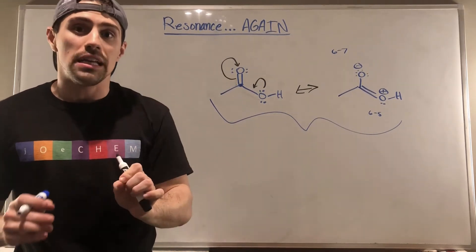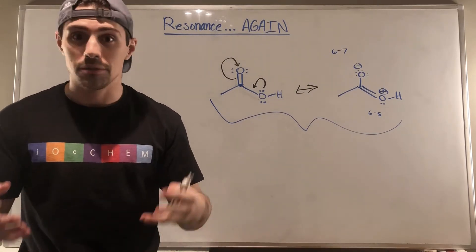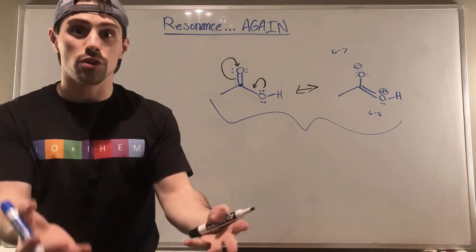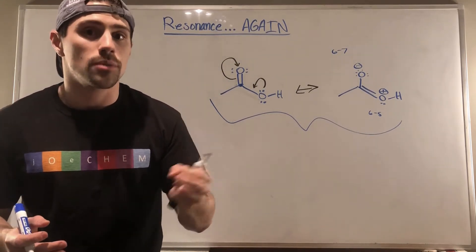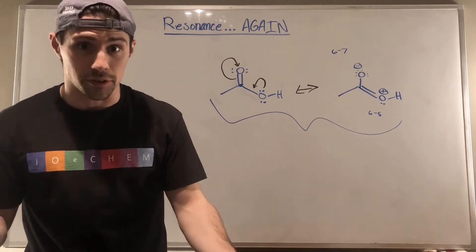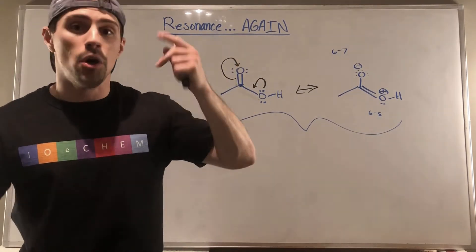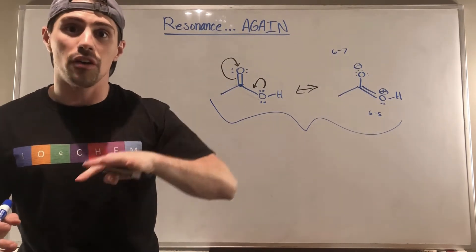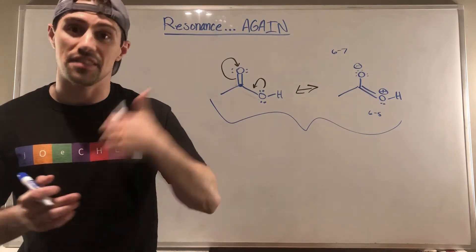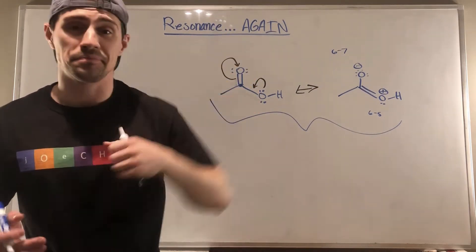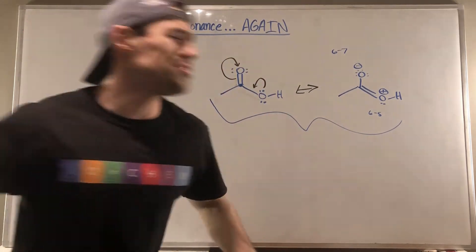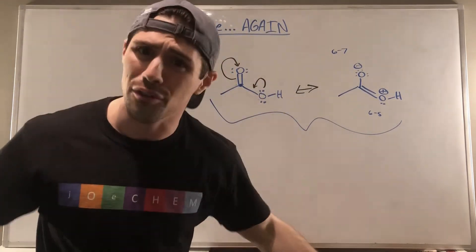One thing we need to cover is that on an exam, one question you can be asked is: given a structure, draw the resonance hybrids and then identify the major contributor to the overall hybrid, or identify the minor contributor. We're going to talk about the checklist that you look at to evaluate a resonance hybrid as good or bad. We'll go over the rules and do some examples, then we'll call it a video.